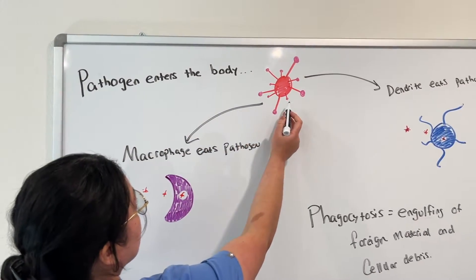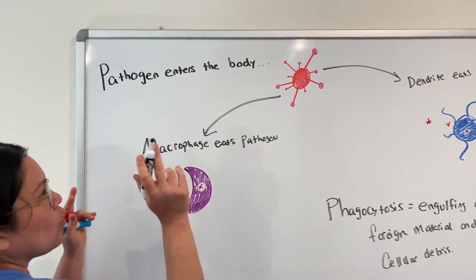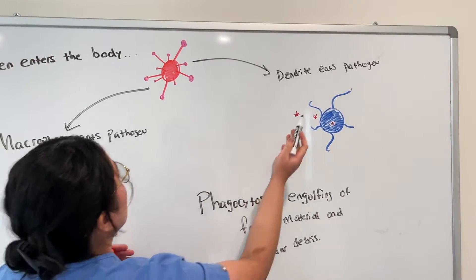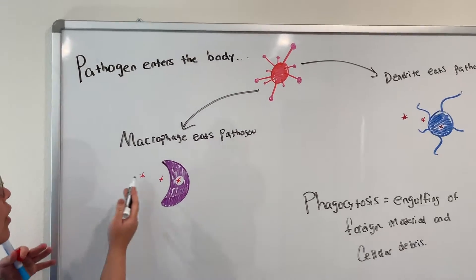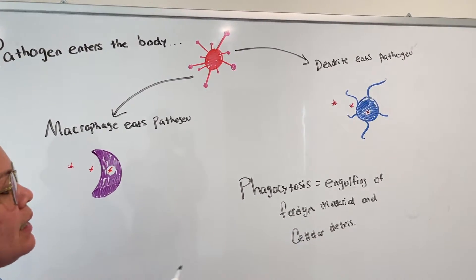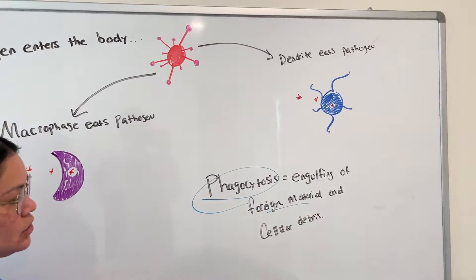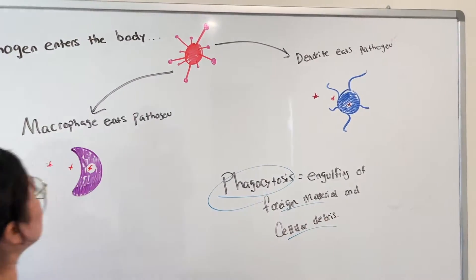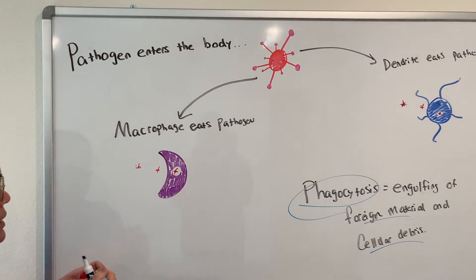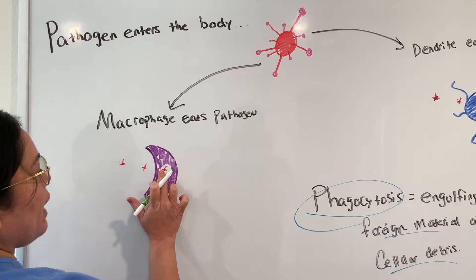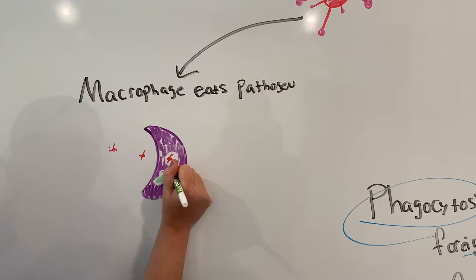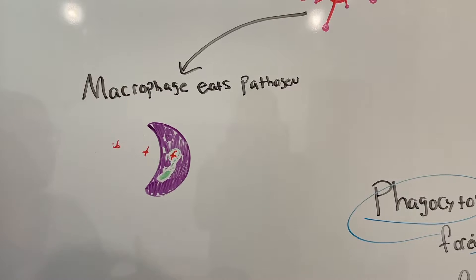So when a pathogen enters the body, generally two things are going to happen. One, a dendritic cell will eat the pathogen via phagocytosis. Or a macrophage will find the pathogen and it will eat it via phagocytosis. Remember, phagocytosis is the engulfing of foreign material or pathogens and cellular debris. Both the macrophage and dendritic cells can engage in phagocytosis. This is exactly what happens when a macrophage eats a pathogen — within the macrophage there are lysosomes, and the lysosome releases enzymes that surround the pathogen and break it down so that it's no longer harmful.